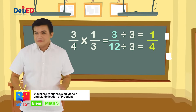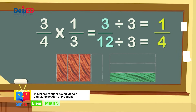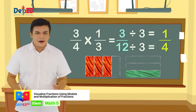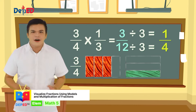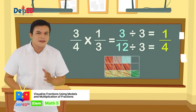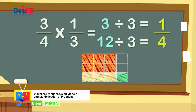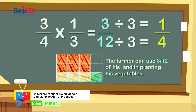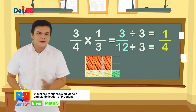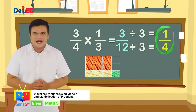To check if one-fourth is correct, we will visualize the fractions. Multiplication of fractions can be visualized by paper folding, drawing, and illustrations using figures like square models. If this rectangle represents one hectare, the shaded part represents the farmer's three-fourths of land. If one-third will overlap three-fourths, the rectangle has been divided into 12 squares and three parts — three-twelfths — are shaded twice. Therefore, one-third of three-fourths equals three-twelfths, which reduces to one-fourth. Our answer is correct!